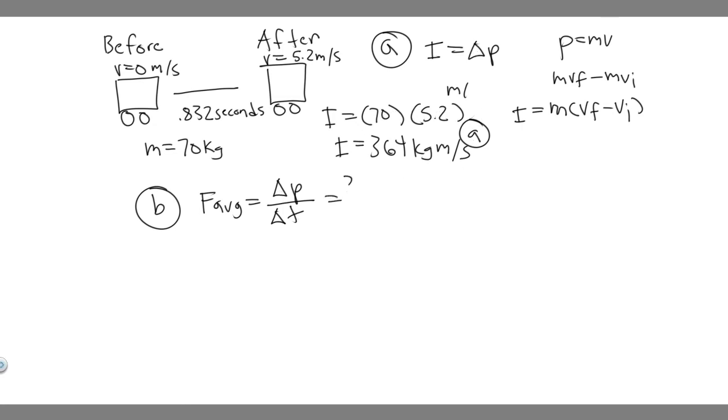So it's just going to be the impulse, which is 364, and then you're dividing by the change in time. That's just the time it takes. In this case, it's just 0.832. So 0.832. This is actually really easy. 364 divided by 0.832, you'll get 437.5. So 437.5, and then the units are kilogram meters per second squared. All we're doing is dividing by another seconds, because this is kilogram meter per second, and then this is a second.